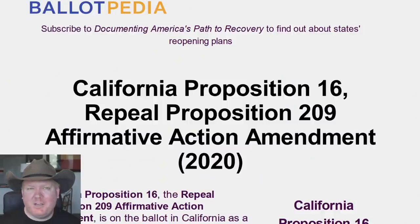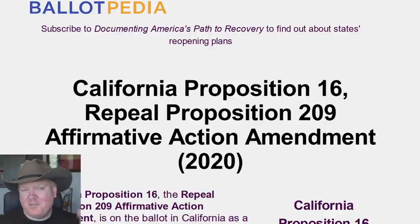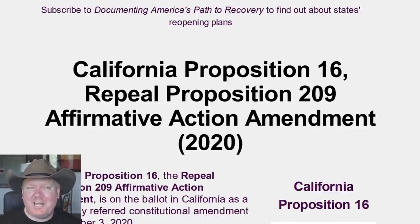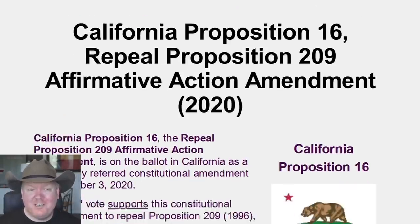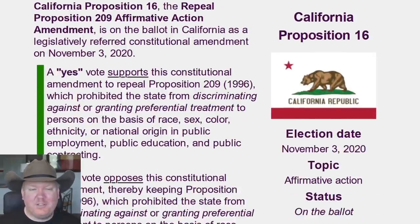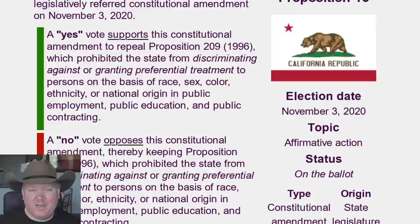This whole story is going to be courtesy of Ballotpedia, because it's a good source for presenting information on what a measure is. So we're just going to read this and comment along the way. This is California Proposition 16 — something California voters are going to vote on this year. The repeal of Proposition 209 is on the ballot and will be voted on November 3rd, 2020.